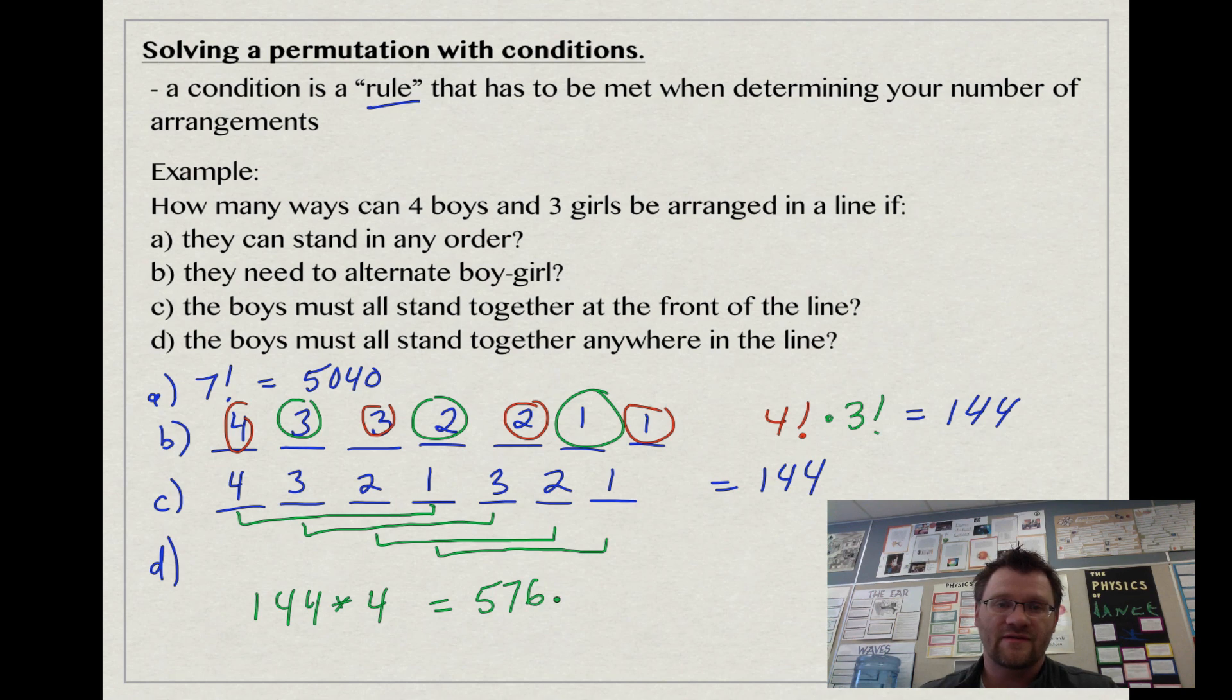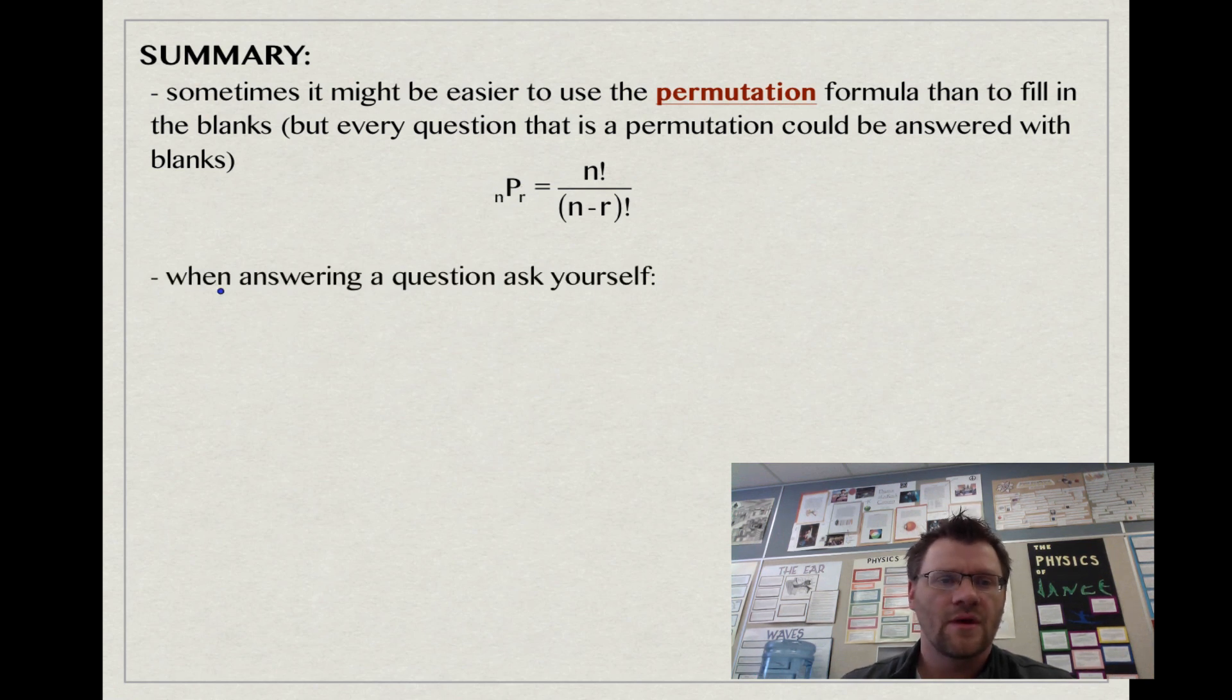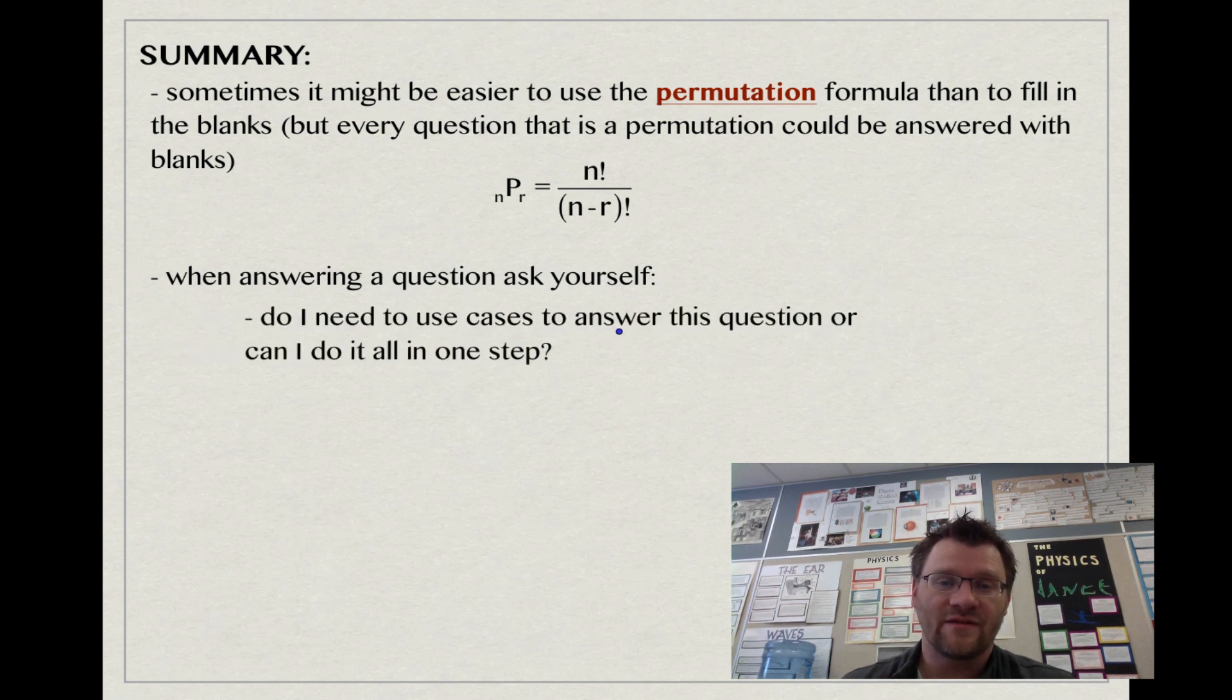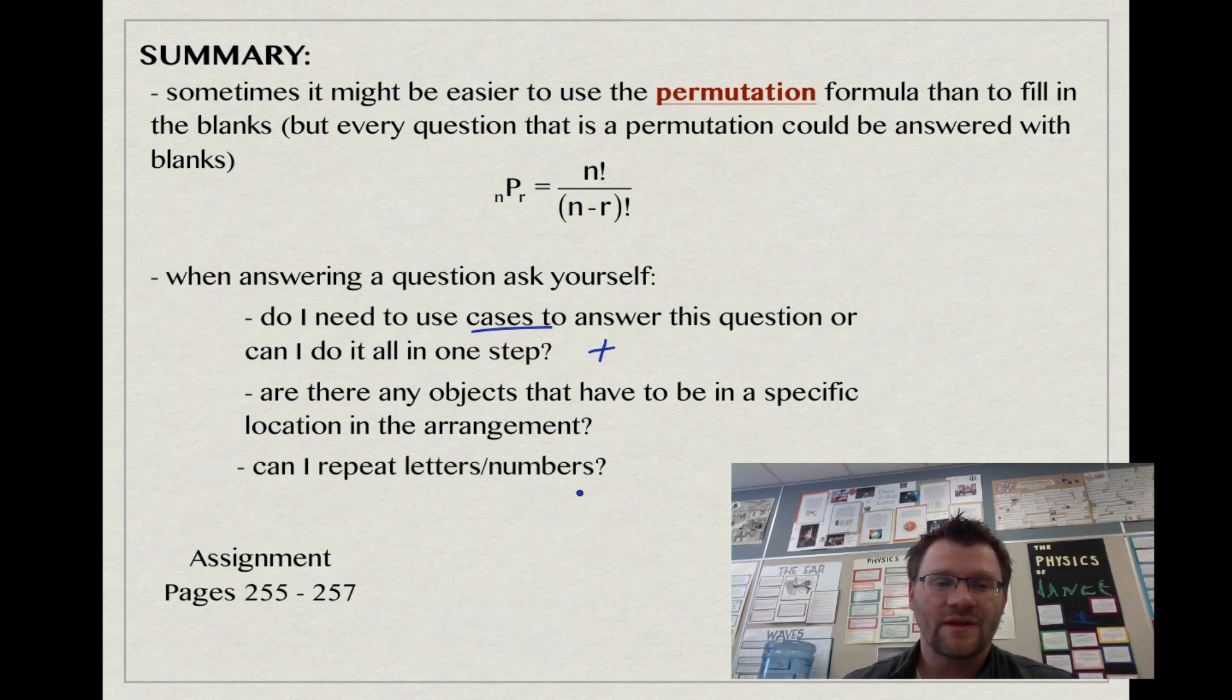In summary, sometimes it might be easier to use a permutation formula or button than to fill in the blanks, but every question that's a permutation could be answered with blanks. Remember that our permutation formula is nPr: n is your total number of objects and r is how many you're going to take and put in that arrangement. When answering a question, ask yourself: do you need to use cases, and are there any conditions that have to be met? Can you repeat any letters or numbers? Your assignment is on pages 255 to 257. Good luck and we'll see you in class.